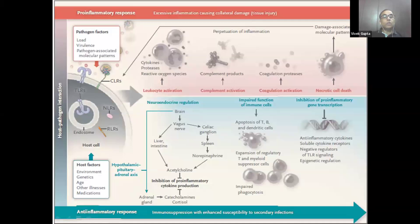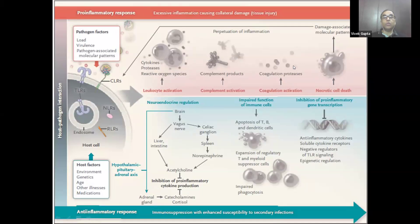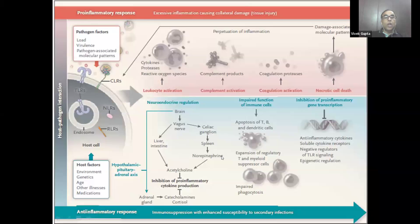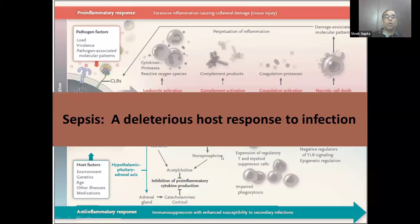Once cells encounter the pathogenic factor, what happens depends upon the load of the bacteria, the pathogenic organism, their virulence, and their virulence factors. The host responds depending upon its age, comorbidities, medications, and environment. There will be perpetuation of inflammatory responses leading to leukocyte activation, complement activation, coagulation activation, and ultimately cell death. During this course, there will be an imbalance between inflammatory and anti-inflammatory markers, neuroendocrine regulation imbalance, and impaired immune cell functions — all because of a deleterious host response to infection.